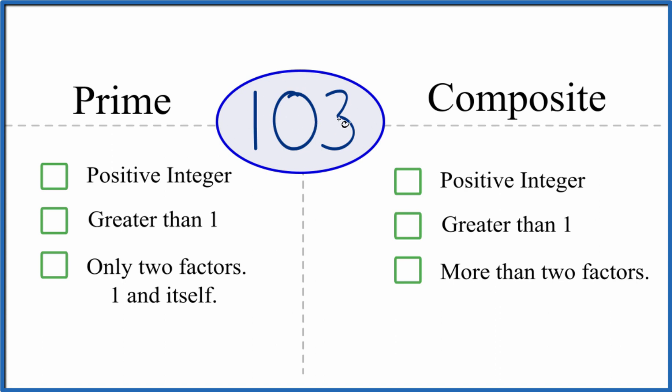Is it a positive integer? Yeah, it's positive. We have a whole number here. It's greater than 1. 103 is greater than 1.